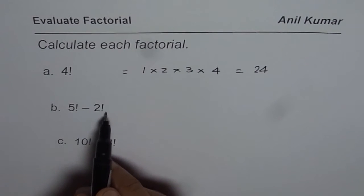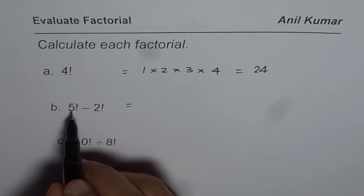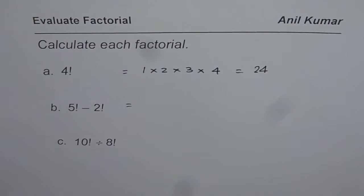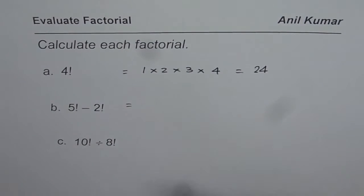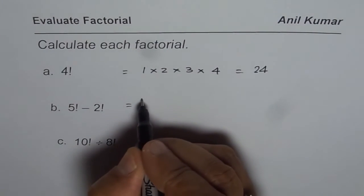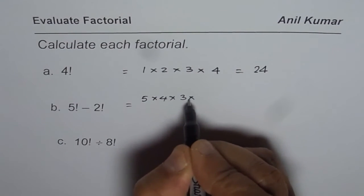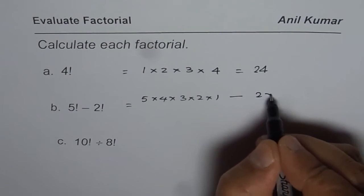Now we have 5 factorial minus 2 factorial. So basically we will find what 5 factorial is and then find what 2 factorial is and then we can do the take away. That is a method you could always adopt. So 5 factorial will be 5 times 4 times 3 times 2 times 1, take away 2 factorial which is 2 times 1.